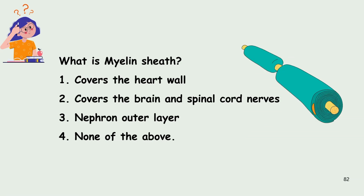Next question: what is a myelin sheath? 1) It covers the heart wall, 2) It covers the brain and spinal cord nerves, 3) It covers the heart wall, or 4) None of the above. The answer is option 2 — it covers the brain and spinal cord nerves.